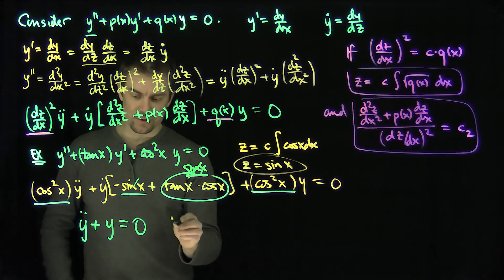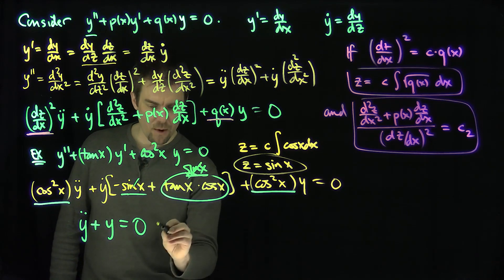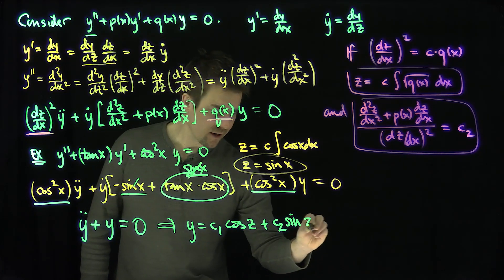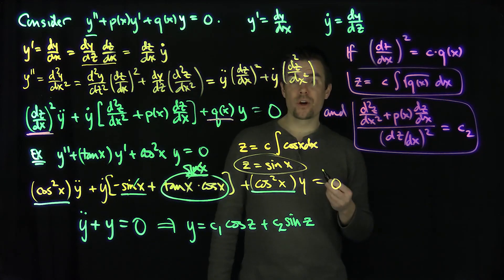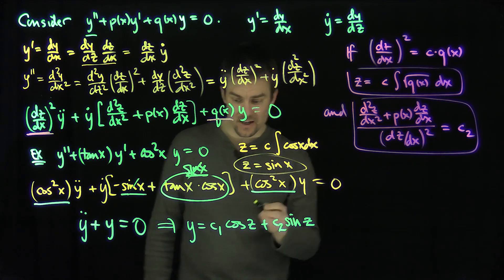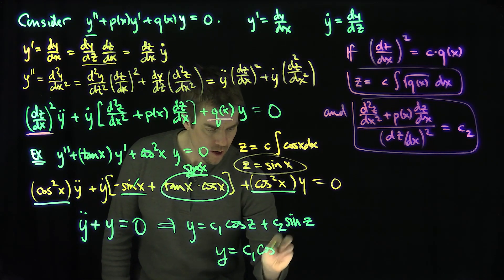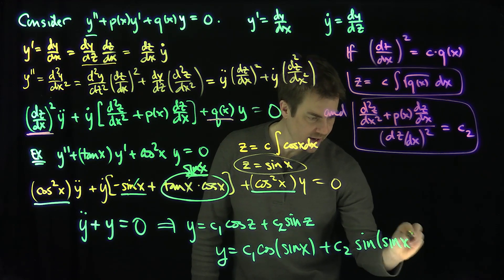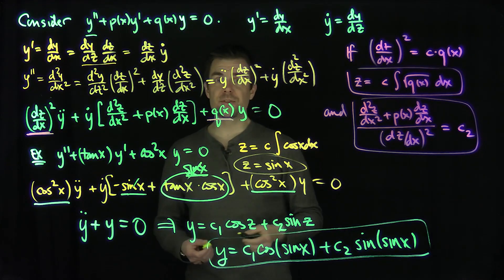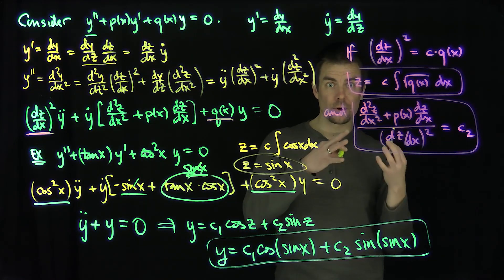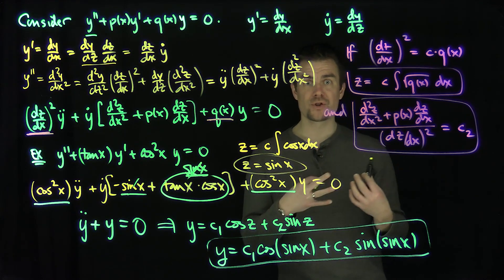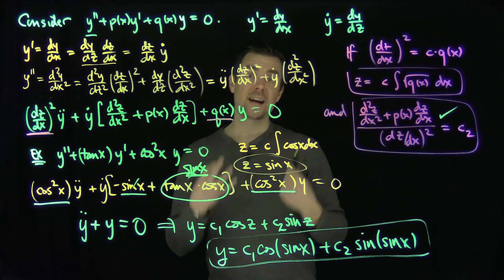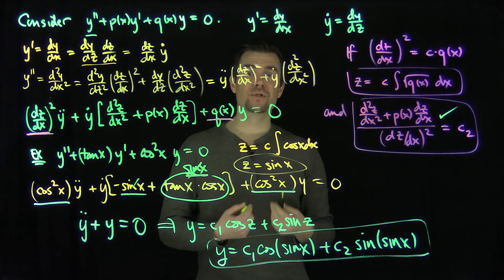We know the general solution of y double-dot plus y equals zero. Remember we're solving the equation for x, and we know the relationship z equals sine of x. So the general solution of our original problem is y equals c1 cosine of sine of x plus c2 sine of sine of x. By making the correct change of coordinates to turn the equation into a constant coefficient equation, we solved the constant coefficient problem and then plugged the new variables back into the solution. Thank you very much.